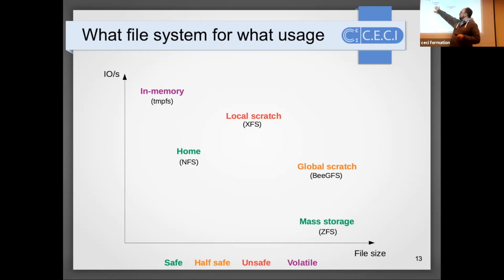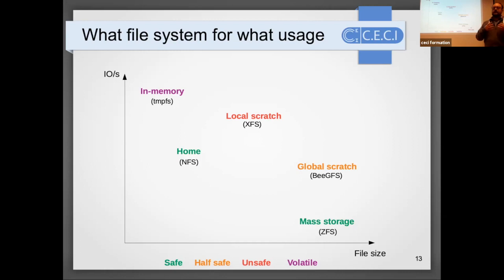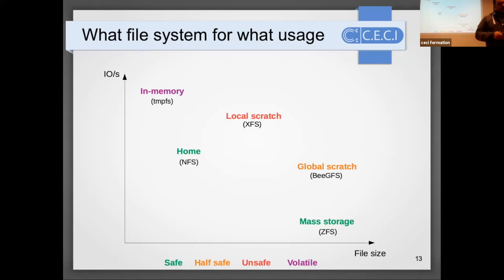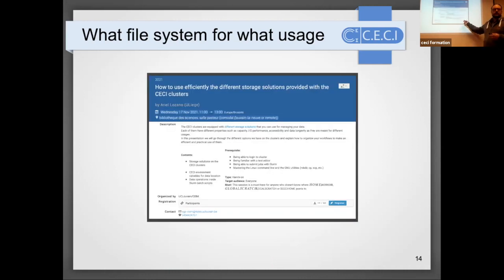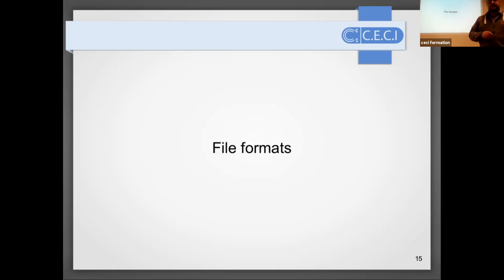On every compute node, if you need to create a file with very demanding I/O, you can first create the file purely in memory, do all operations using the very fast memory bandwidth, and then store the file to a real file system. This topic will be covered in more detail by another speaker in the next session, who will explain all storage types on CC clusters.